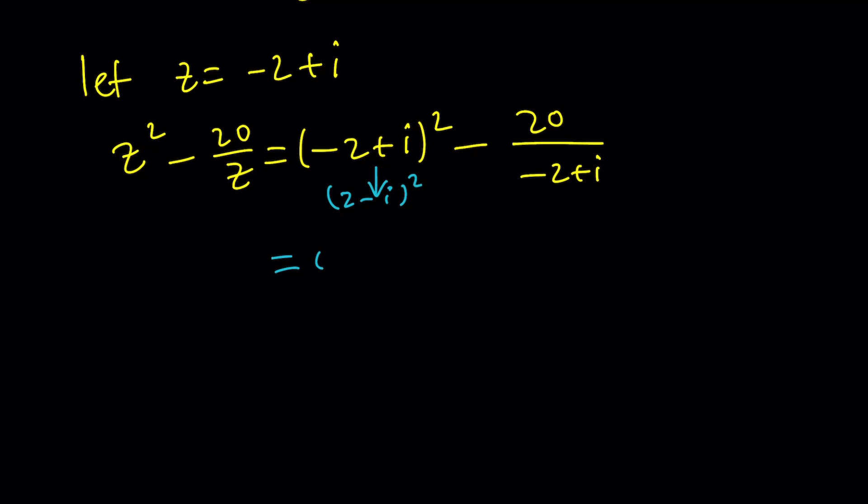4 minus 4i plus i squared, which is negative 1. And this becomes 20 over 2 minus i. Multiply by the conjugates, 2 plus i, 2 plus i. And then this is going to give you 4 plus 1, which is 5. 5 goes into 20 four times.